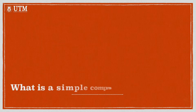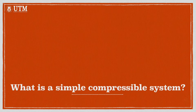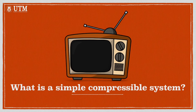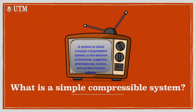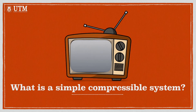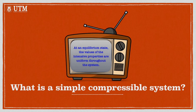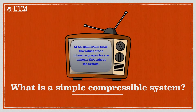What is a simple compressible system? A system is called a simple compressible system in the absence of electrical, magnetic, gravitational, motion, and surface tension effects. At an equilibrium state, the values of the intensive properties are uniform throughout the system.